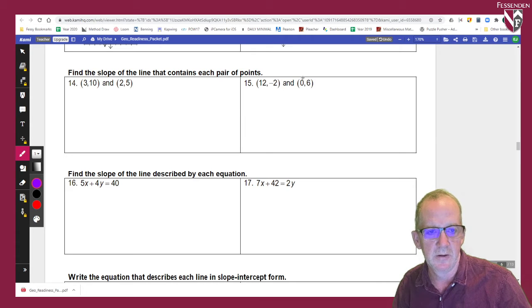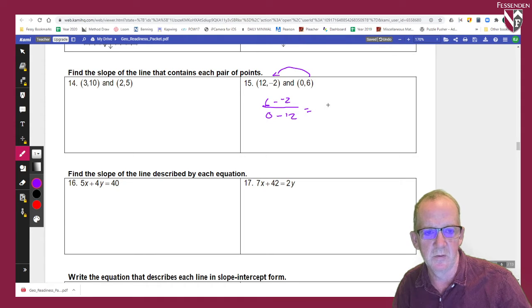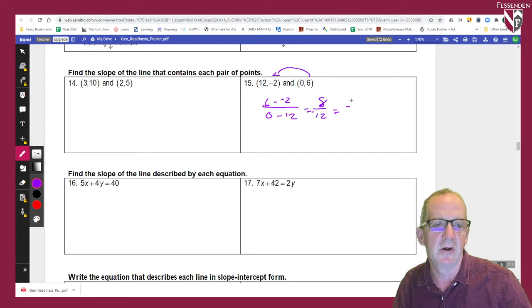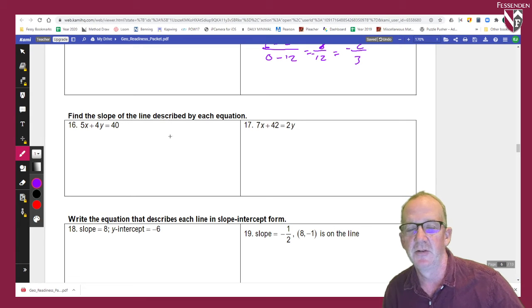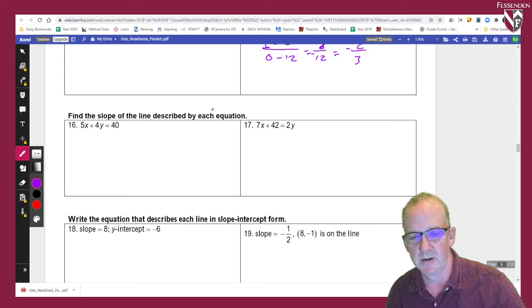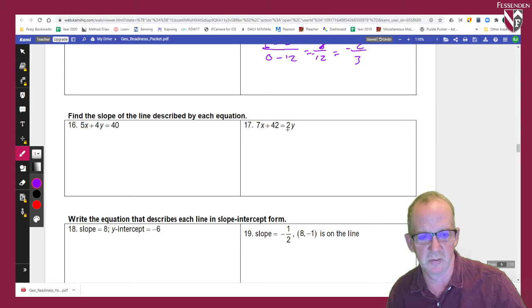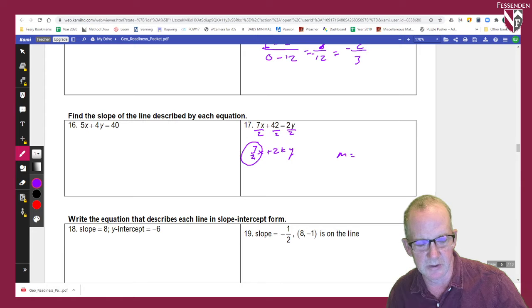Slope calculations. You guys should know how to do this pretty well. The change in Y. So six minus negative two over zero minus 12, which is eight over negative 12. Which is negative two thirds. Okay. Find the slope here. So these are not in slope intercept form. So I would put it in function form or slope intercept form. Let's do this one here. This one's closer. It looks like two slope intercept form. So I divide everything by two. And we'll be left with a Y on the right. And seven halves. X plus 21. And therefore, our slope is this piece right there. And we use the letter M and we'll call it seven halves. All right.